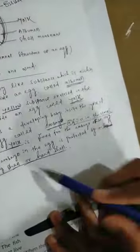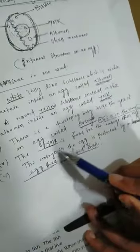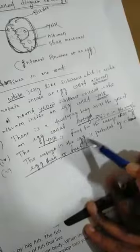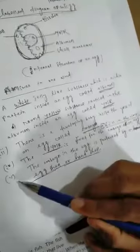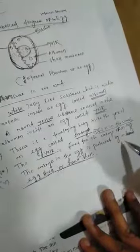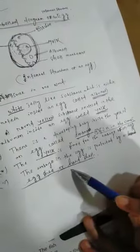Fill in the blanks, question number nine. The yolk is food for the embryo of an egg. Number five: The embryo in the egg is protected by egg shell or hard shell.